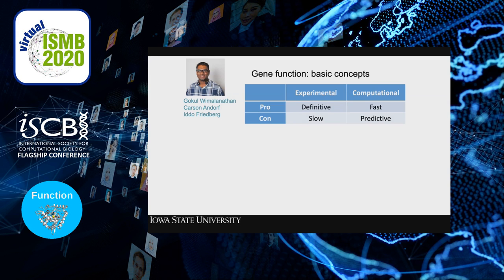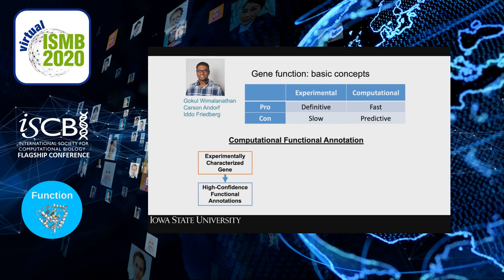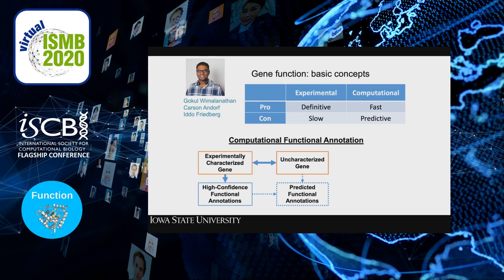We want to make computationally derived datasets that have pretty good quality. The general concept for computational functional annotation is: take an experimentally characterized gene with high confidence functional annotations, match it to an uncharacterized gene, and inherit those annotations as predicted functional annotations. In my research group and many others, we do that with the gene ontology.